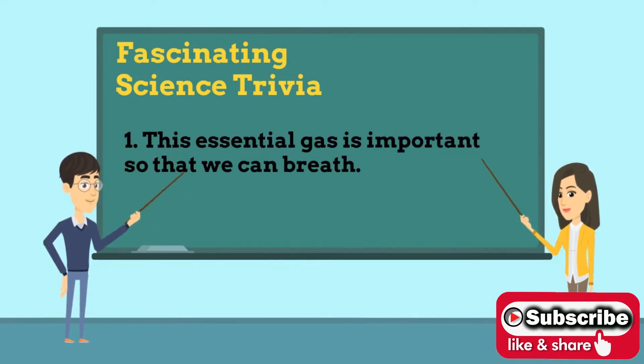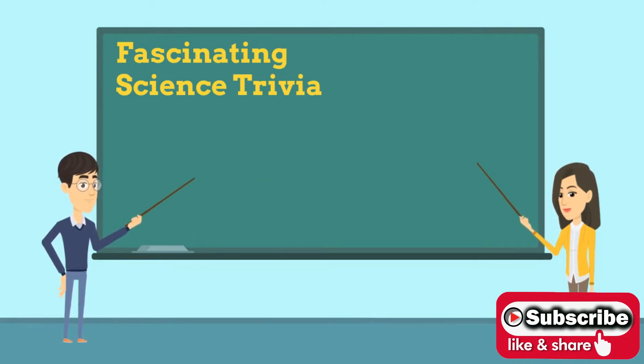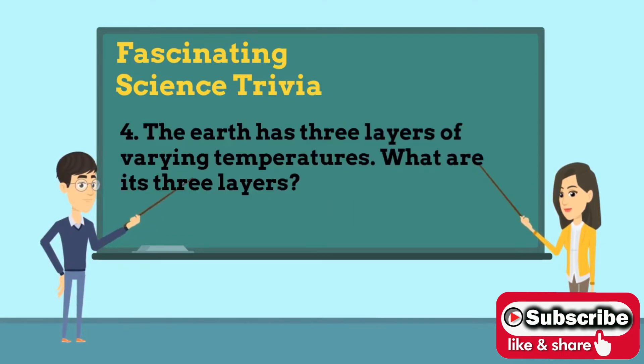important so that we can breathe. Answer is oxygen. Number two: What is the nearest planet to the Sun? Answer is Mercury. Number three: How many teeth does an adult human have? Answer is 32. Number four: The earth has